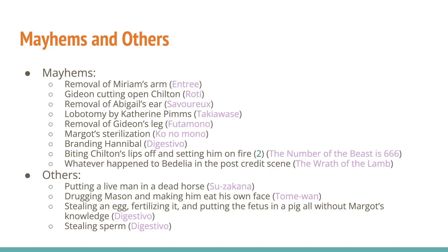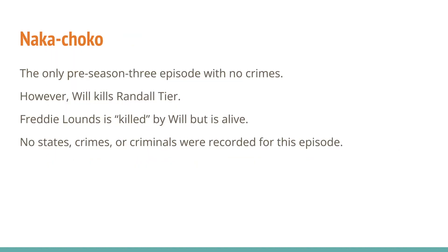The 'other' crimes are ones that are definitely illegal, but I don't know what you'd call them, or it's assault and I didn't want to make a separate category. Putting a live man in a dead horse is animal cruelty and assault. Drugging Mason and making him eat his own face — I don't know what that would be. Stealing an egg, fertilizing it, putting the fetus in a pig without Margot's knowledge or consent is definitely illegal. And stealing sperm is definitely sexual assault, but I didn't want to make a category for just one. Nakachoko is the only pre-season three episode with no crimes — however, Will does kill Randall here, and Freddie Lounds is 'killed' by Will but is alive, so no states, crimes, or criminals were recorded.